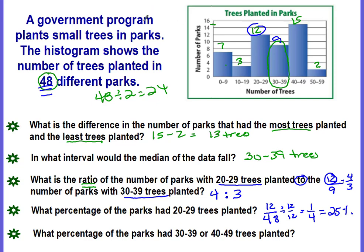Okay, so we know we need to, this OR means that we're going to combine the two. So how many parks had 30 to 39 trees planted? 9. How many parks had 40 to 49 trees planted? 15. So we need to combine them or add them together, and it's going to give us 24.